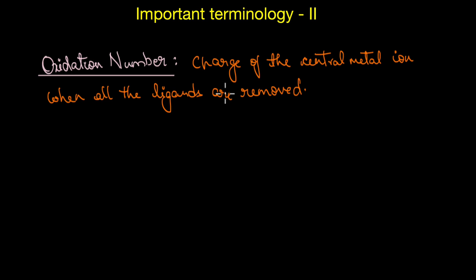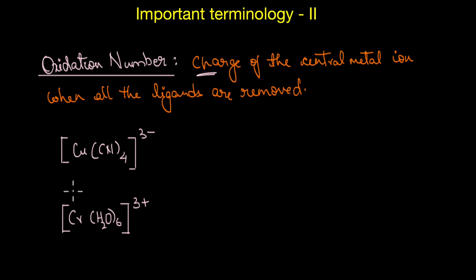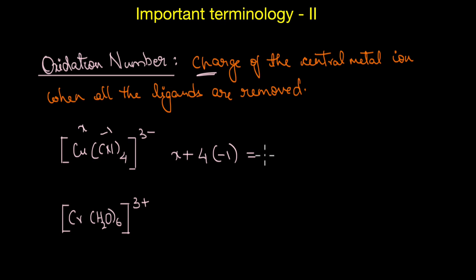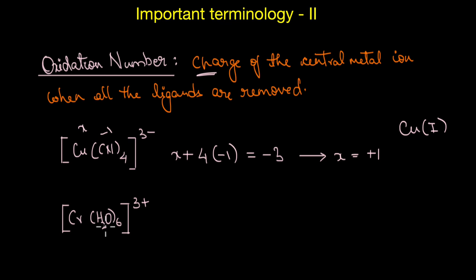The oxidation number of the central metal atom in a complex is defined as the charge it would carry if all the ligands are removed along with their shared electron pairs. For example, for copper in this complex: if x is the oxidation state of copper and cyanide has a −1 charge, then x + 4(−1) = −3, giving x = +1. So the oxidation state of copper is written as Cu(I).